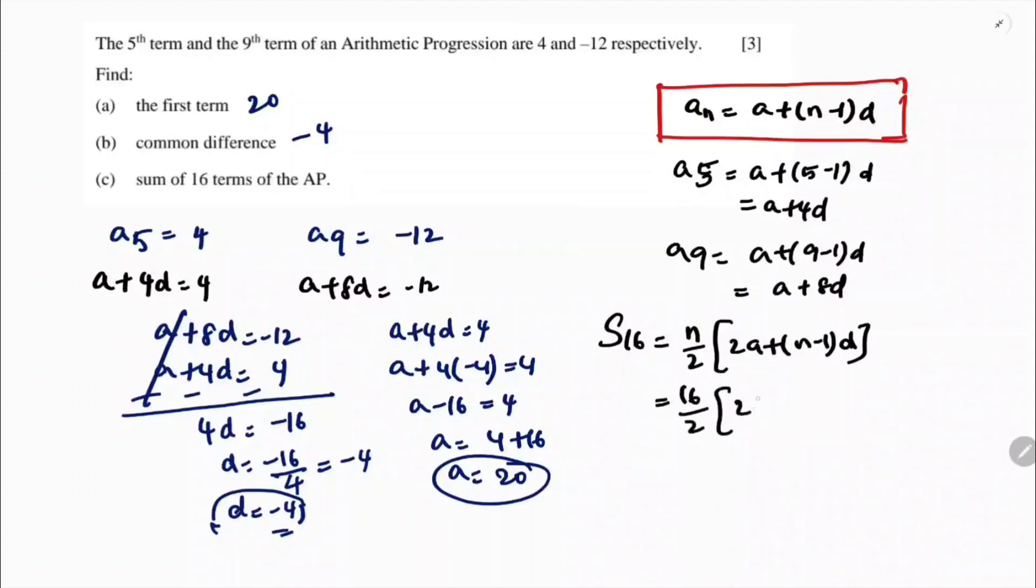16 by 2, 2 times A is 20, plus 16 minus 1 into D is minus 4. 16 by 2 is 8. 2 times 20 is 40, plus 16 minus 1 is 15, minus 4.